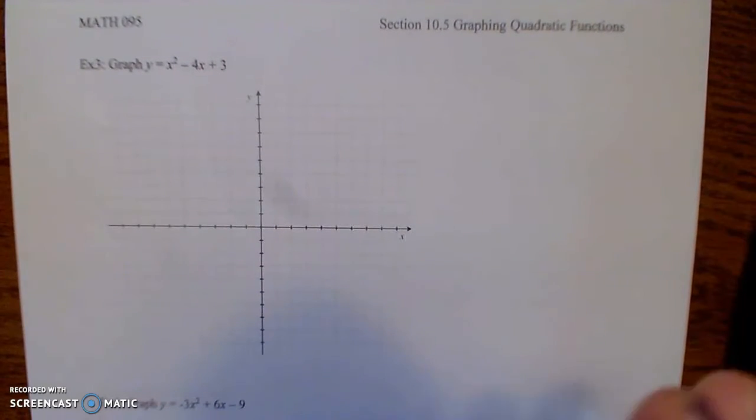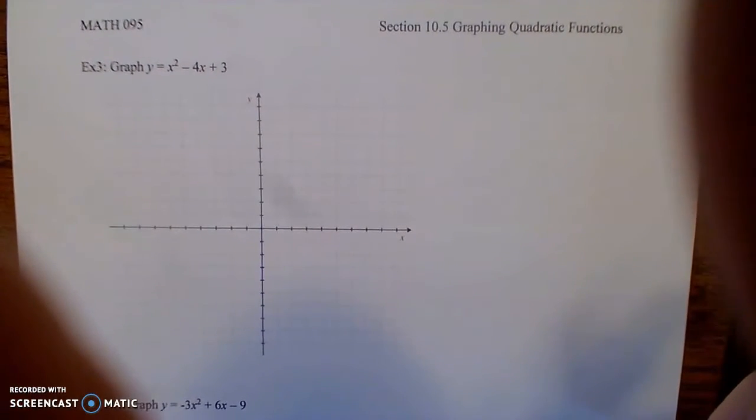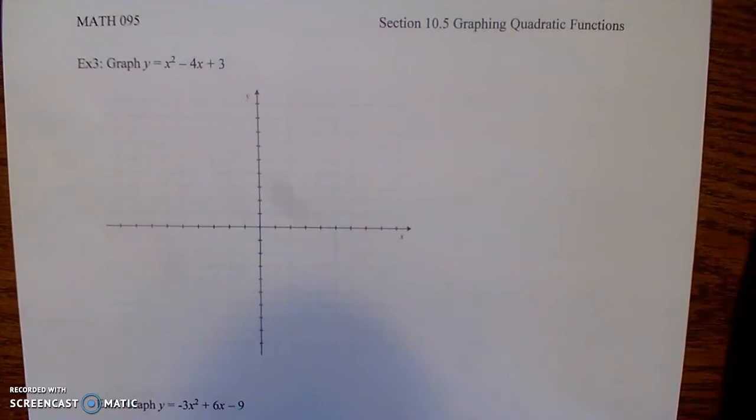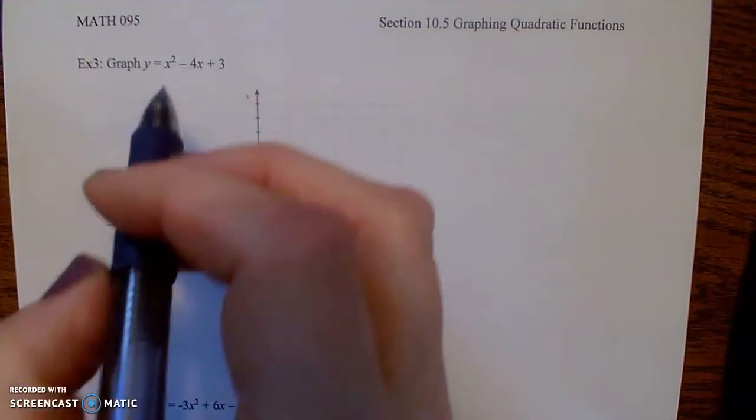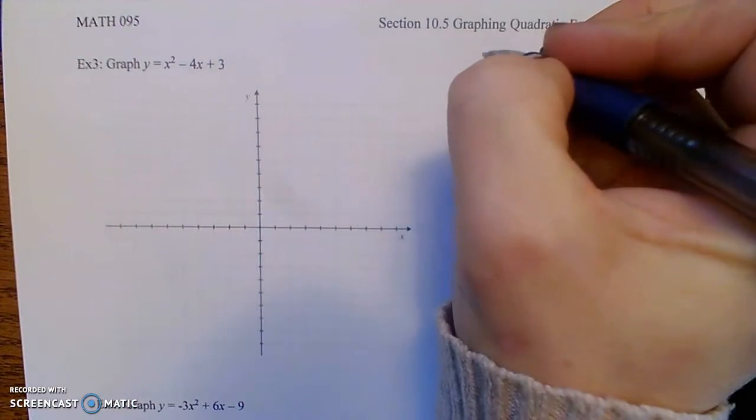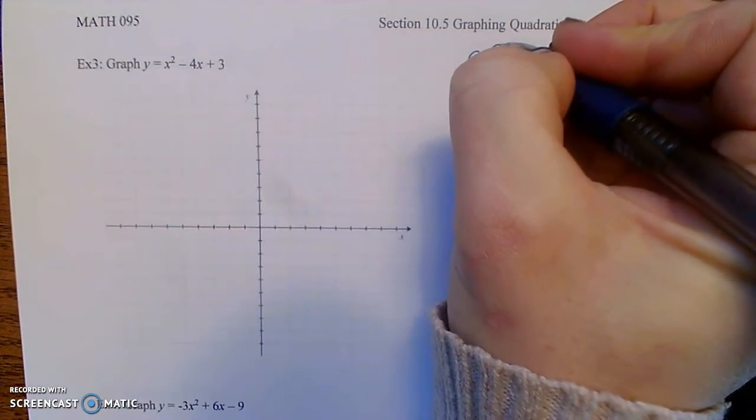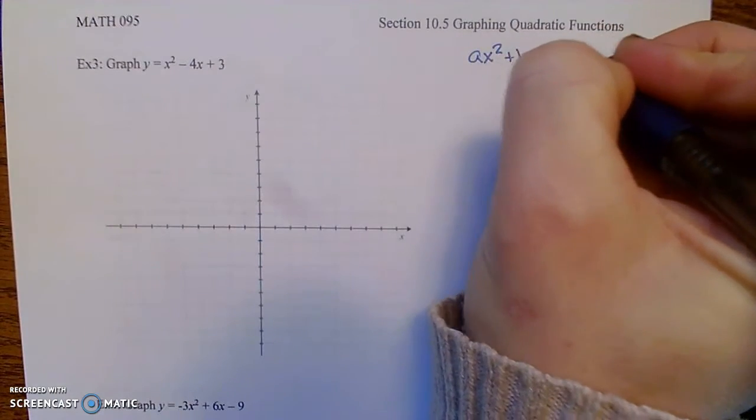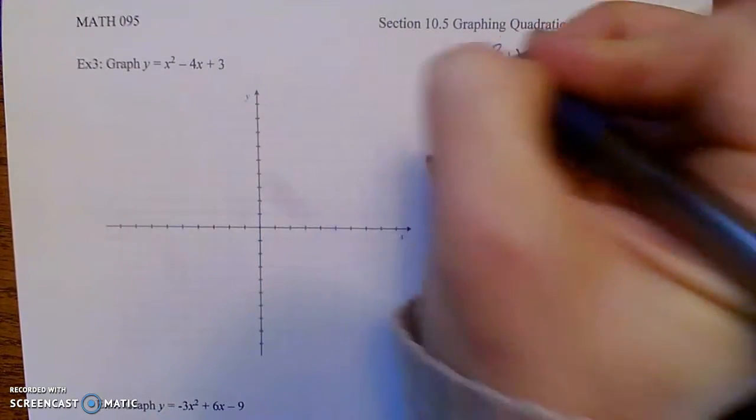We'll do two examples now where we graph a parabola given by a quadratic that's in standard form. Remember, standard form looks like ax squared plus bx plus c, so y equals that.